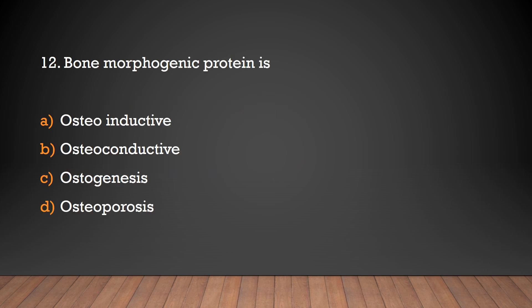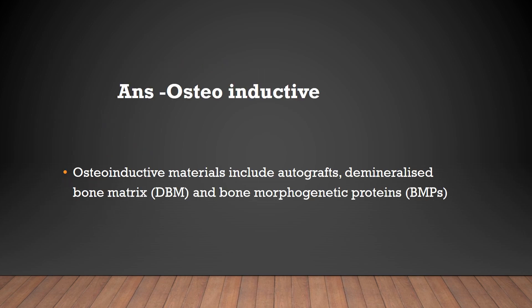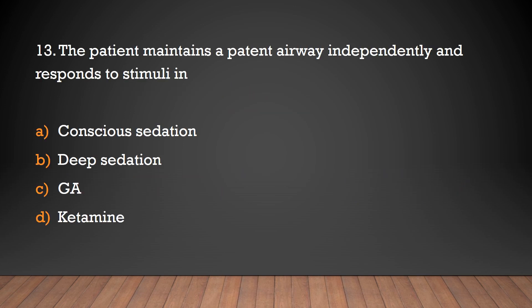Bone morphogenic protein is osteoinductive. Osteoinductive materials include autograft, demineralized bone matrix, and bone morphogenic proteins.